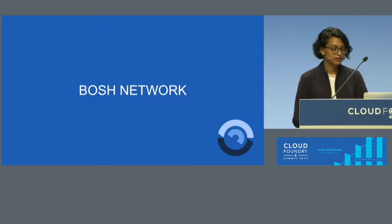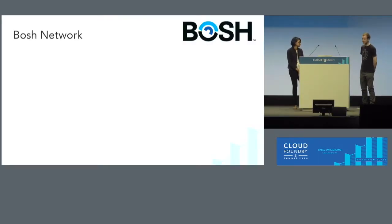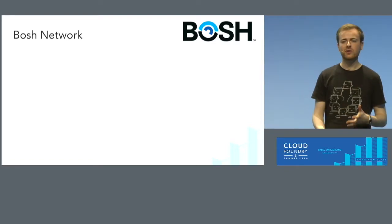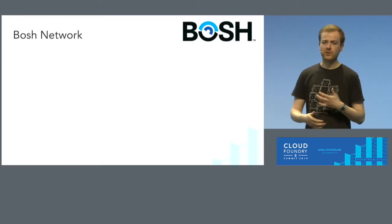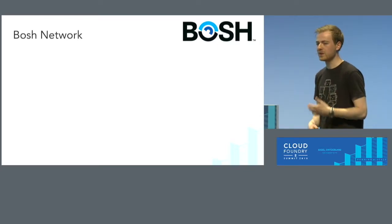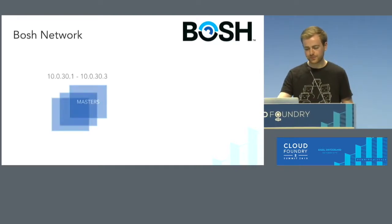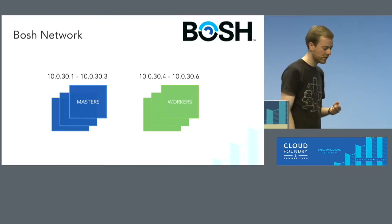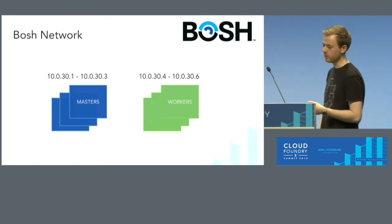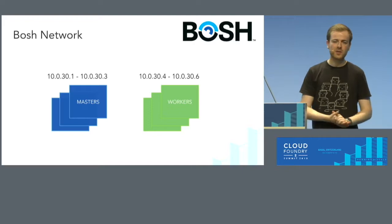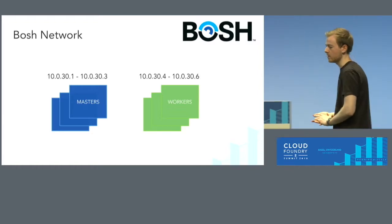Let's start with BOSH. It has been the cornerstone of Cloud Foundry for years. So we're providing Kubernetes on top of BOSH, but what does that mean in terms of networking? Let's spin up a CFCR cluster. For those familiar with Kubernetes, we have three masters and three workers. They've grabbed IP addresses from the BOSH network range — masters are from .1 through to .3 and workers from .4 through to .6.